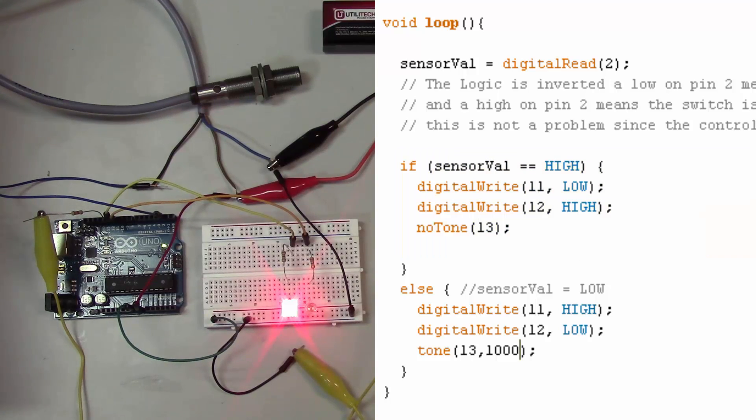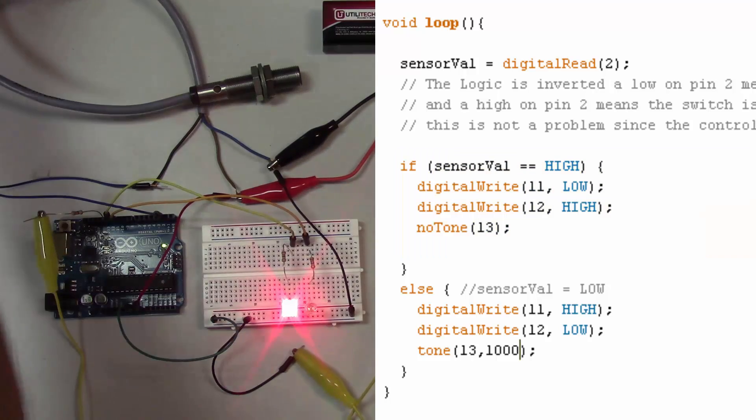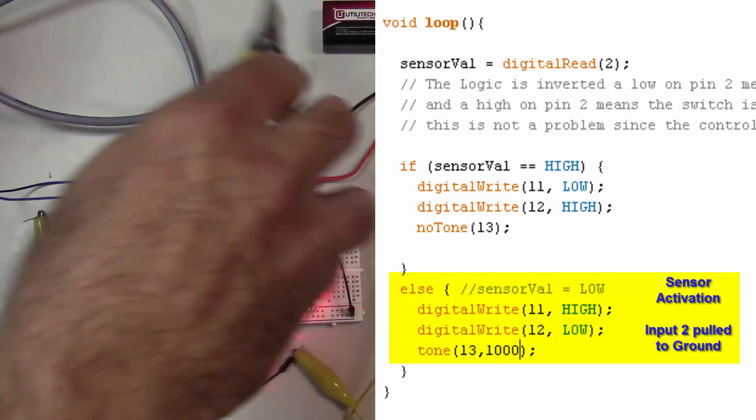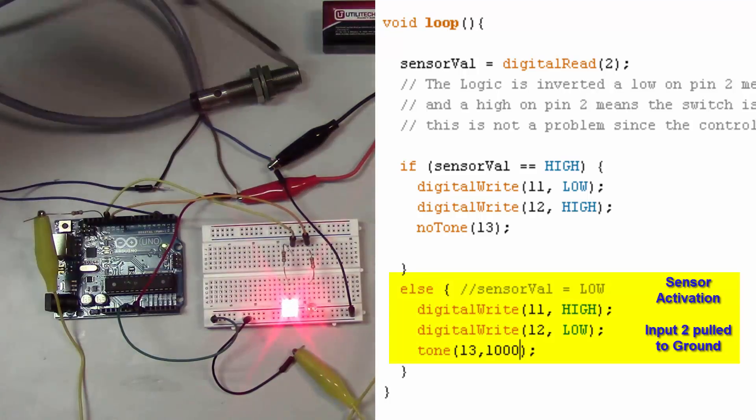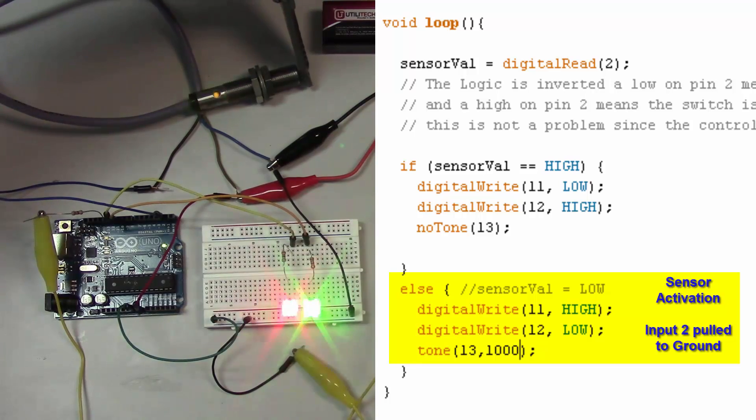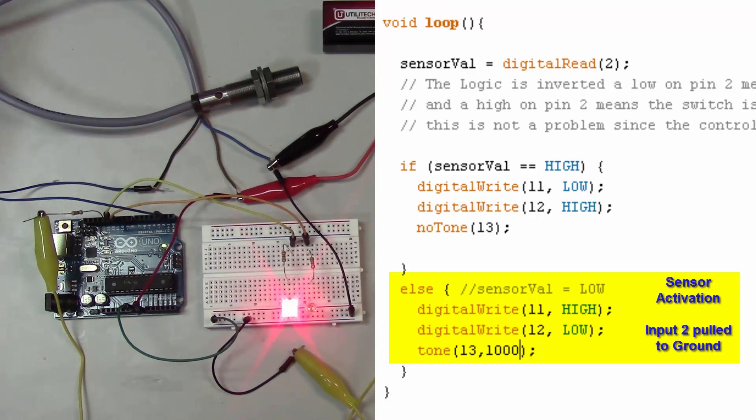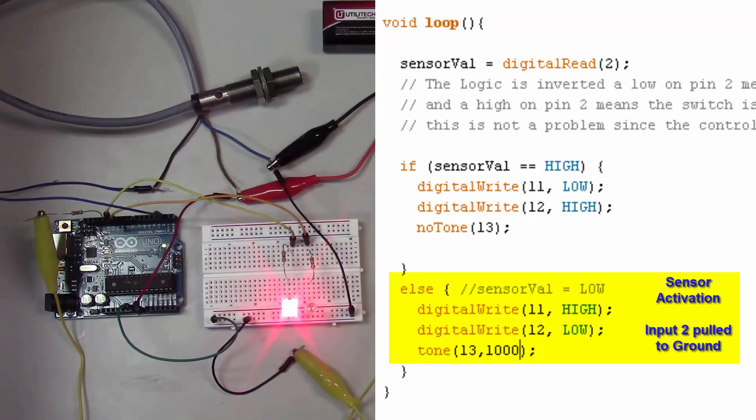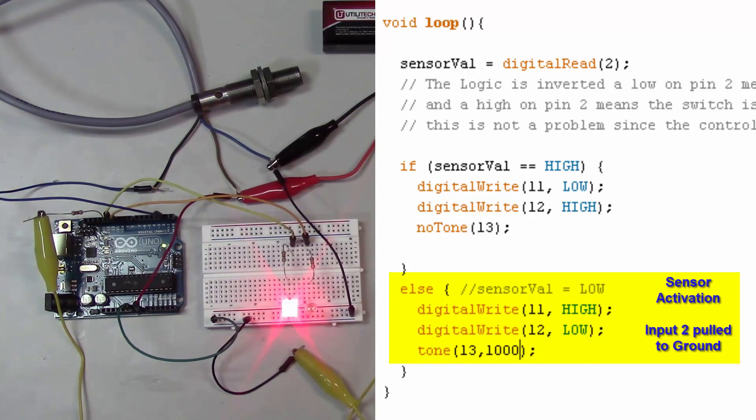The other possibility is we do have the sensor activated like this. If our sensor is activated then we want pin 11 to be high that's our green LED and we want pin 12 to be low that's our red LED and we want to make a tone on pin 13 of 1000 hertz and that's the tone that you hear so it's fairly simple it only requires a few components.